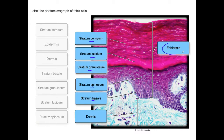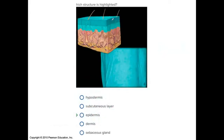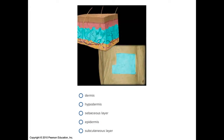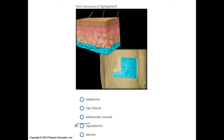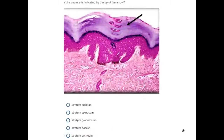Below the epidermis is the dermis, and below that is the hypodermis — epidermis, dermis, hypodermis. On exam images, arrows or color highlights may indicate specific layers. The top highlighted layer is the epidermis, below it is the dermis, and below that is the hypodermis. The topmost sublayer from the surface is the stratum corneum — stratified squamous epithelium.